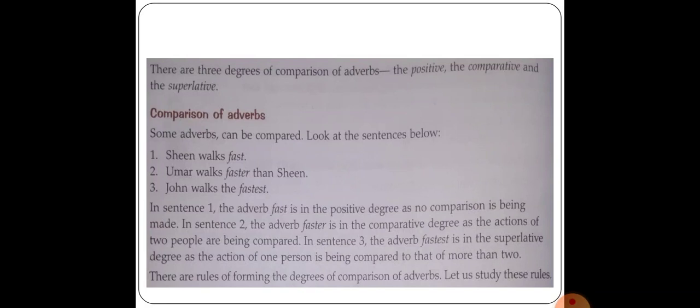In sentence one, 'Sheen walks fast' — 'fast' is the positive degree, as no comparison is being made. In sentence two, 'Umar walks faster' — 'faster' is the comparative degree, as the actions of two people, Umar and Sheen, are being compared. In sentence three, 'John walks the fastest' — 'fastest' is the superlative degree, as one person's action is compared to that of more than two people. This is similar to how degrees work in adjectives.